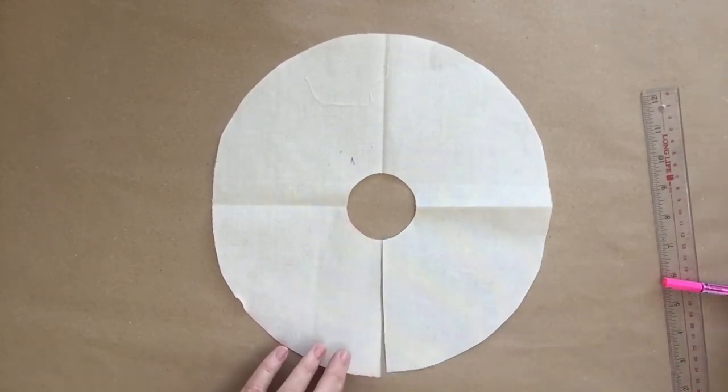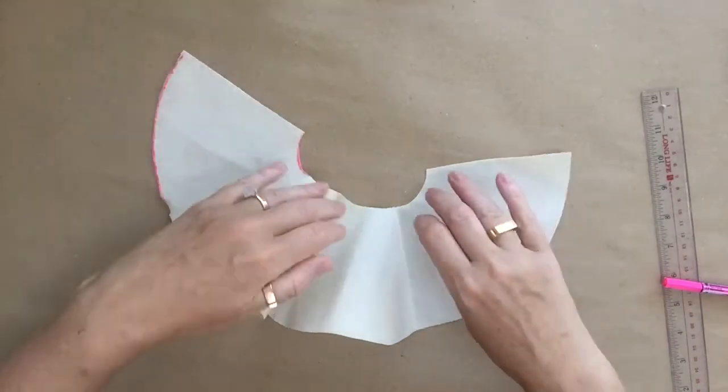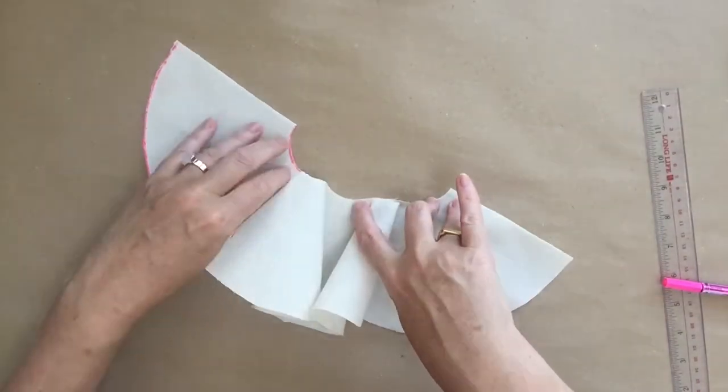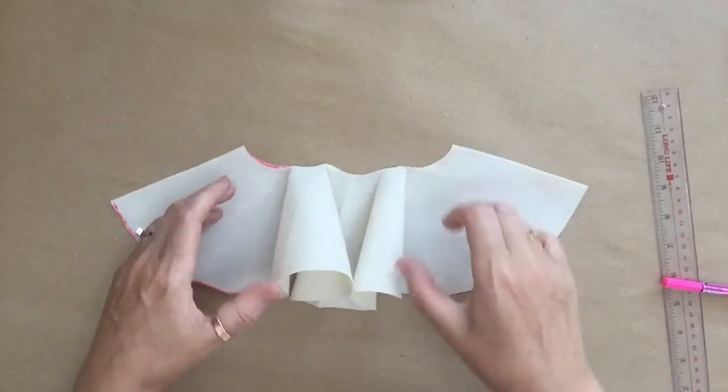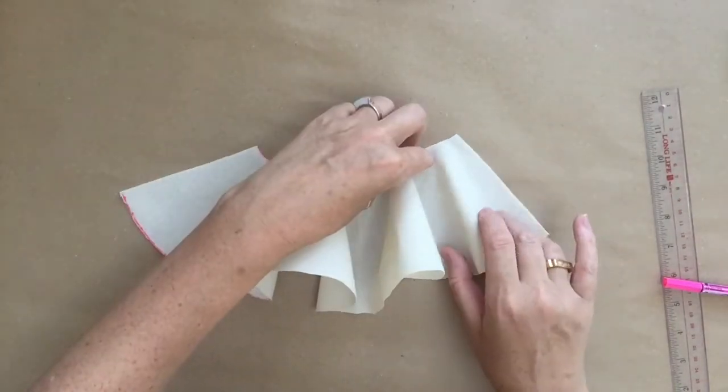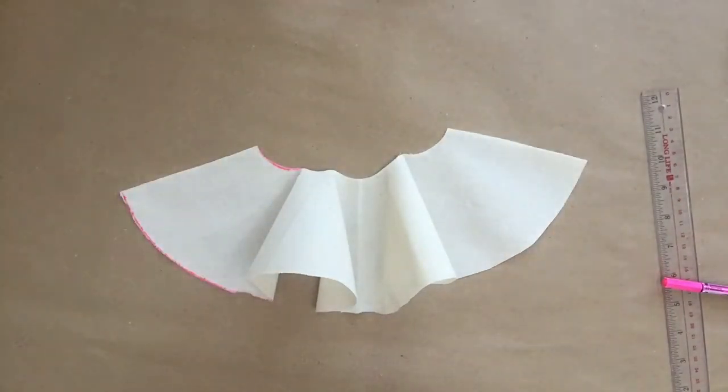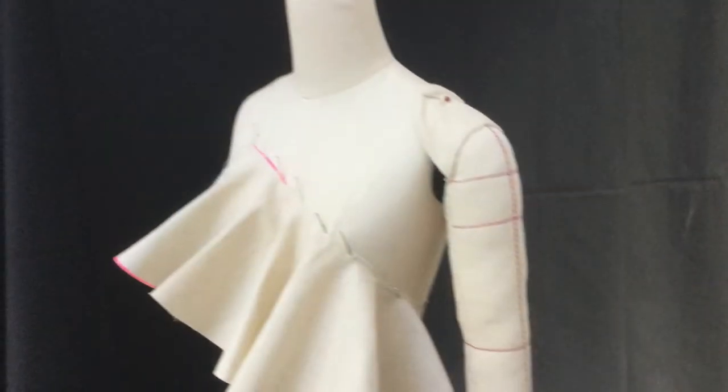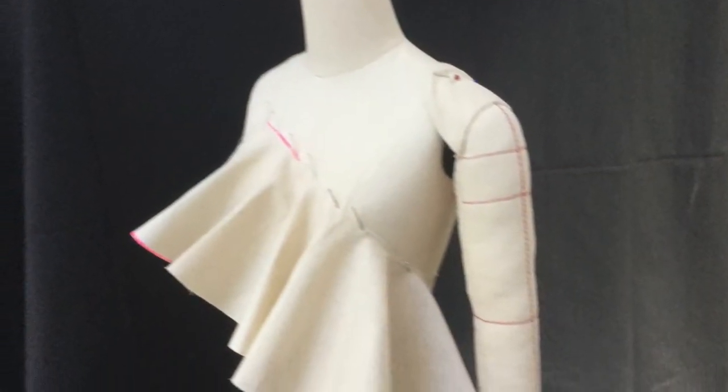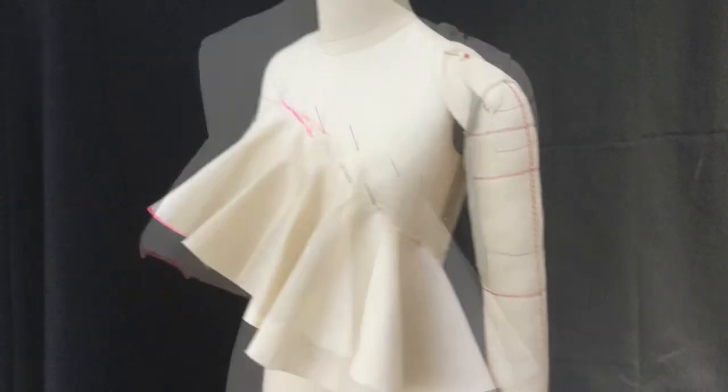To make the flounce work, what you have to do is sew down the inner edge, so you have a lot of volume at the outside edge, but the small edge on the center is flat to the body. As you can see, I've pinned it here onto the mannequin. You can pin it in any direction you like because it can be sewn into any seam line.